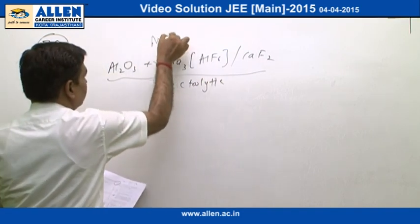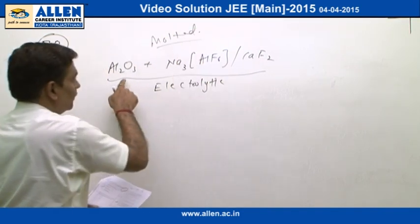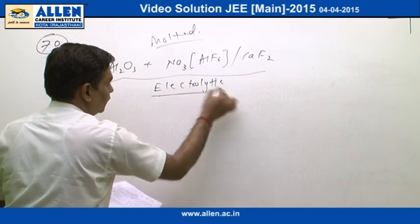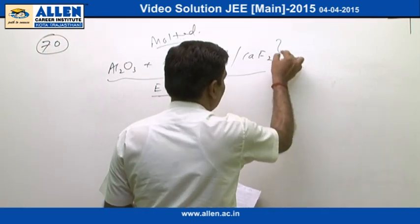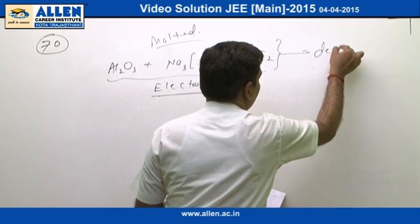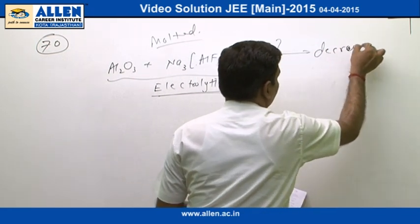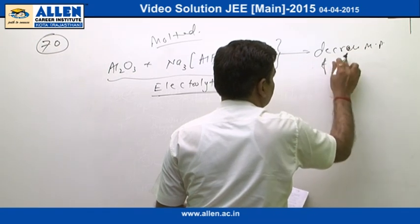In molten form, that means molten mixture of these compounds are used as electrolyte in this process. CaF2 or Na3AlF6 serve to decrease the melting point of the electrolytic mixture.